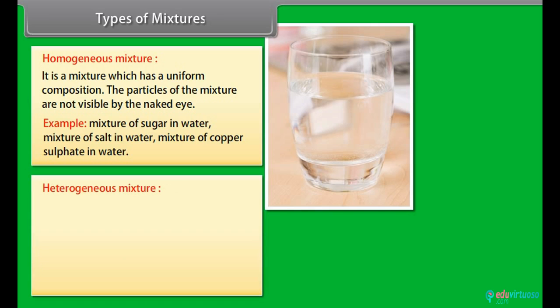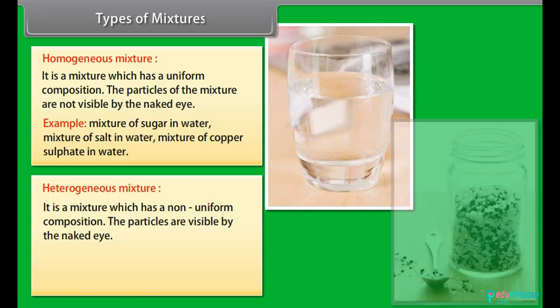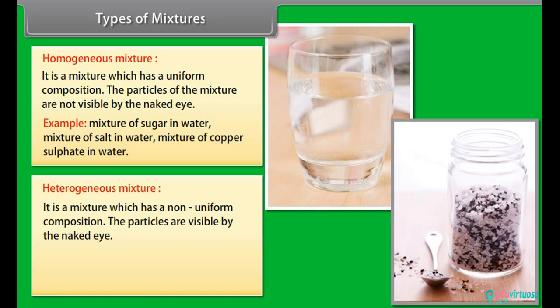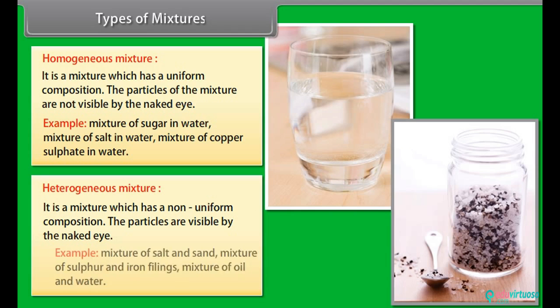A heterogeneous mixture is a mixture which has a non-uniform composition. The particles are visible to the naked eye. Examples include mixture of salt and sand, mixture of sulfur and iron filings, and mixture of oil and water.